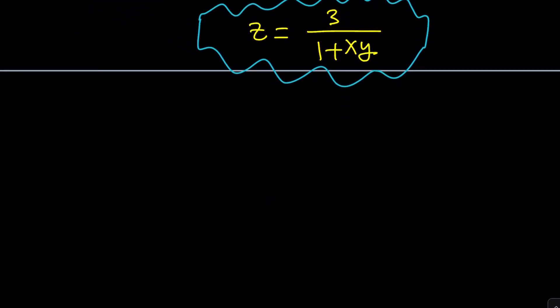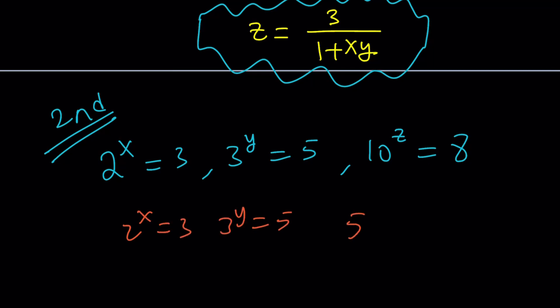Second method. Again, our problem was 2 to the x equals 3, 3 to the y equals 5, and 10 to the z equals 8. There was another type of problem where we had something like 2 to the x equals 3, 3 to the y equals 5, and 5 to the z equals 11. I don't know. And then, it's asking for xyz. Have you noticed? You're just going to plug it in, and then plug it in, and then you're going to do xyz. Of course,